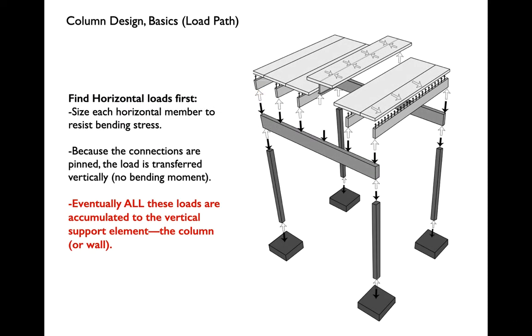So for this video, we'll talk about load paths and tributary areas. As we're designing a structure, we'll usually look at the horizontal loads first. We'll figure out the size of the slab, we will design the beams, which we've done for a few videos now. And then once we have all of those horizontal loads, we will look at maybe the architecturally desirable layout of columns and walls, and we'll think about how each one of those columns or walls are picking up the loads from the floors above.